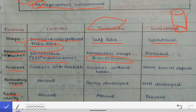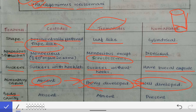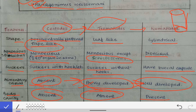Regarding suckers: cestodes have suckers with hooklets, trematodes have suckers but no hooks, while nematodes have a buccal capsule instead of suckers or hooklets. Regarding the alimentary canal: it is absent in cestodes (most primitive), poorly developed in trematodes, and well developed in nematodes. Body cavity is also absent in cestodes, absent in trematodes, but present in nematodes. Next we will see the individual organisms separately.